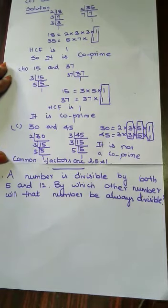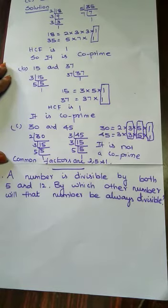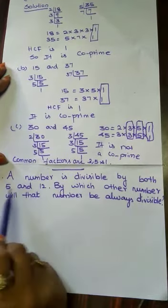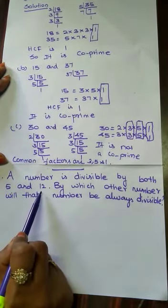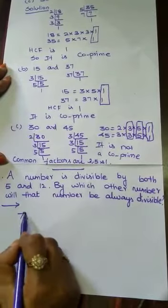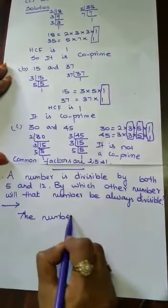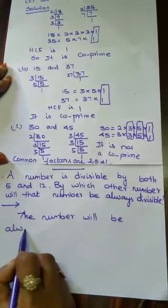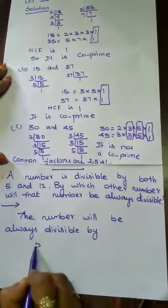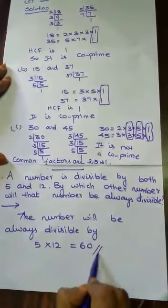Last problem: a number is divisible by both 5 and 12. By which other number will that number always be divisible? We multiply these two numbers: 5 × 12 = 60. So the number will always be divisible by 60.